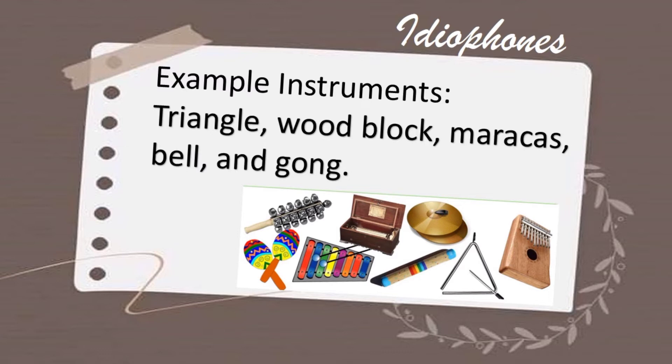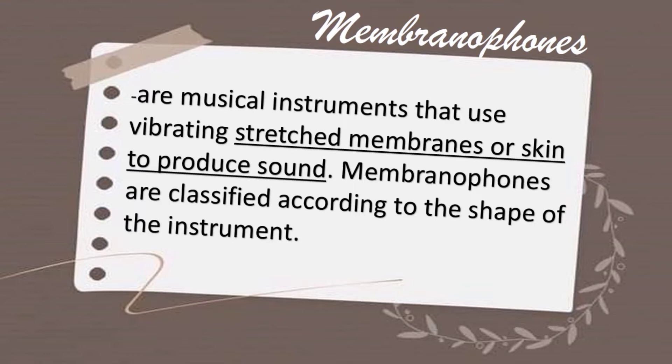Example instruments for idiophones include the triangle, woodblock, maracas, bell, and gong.